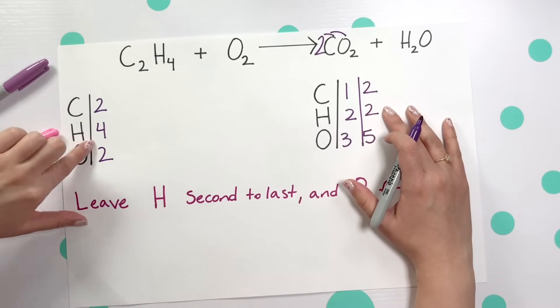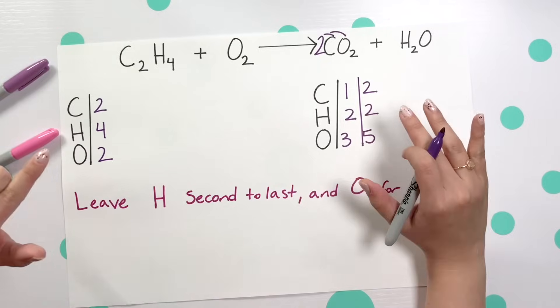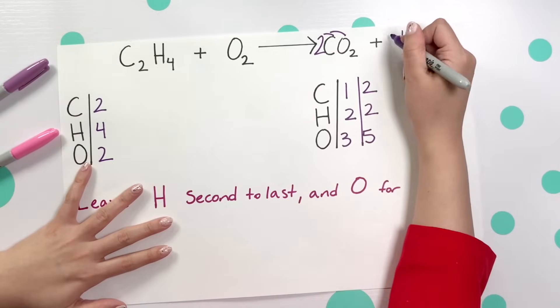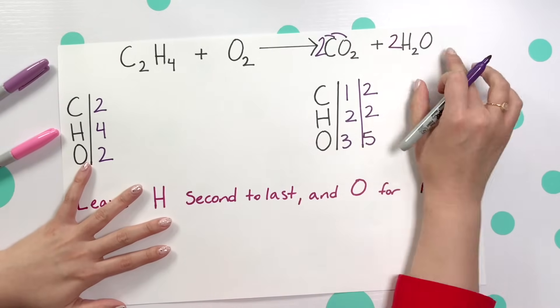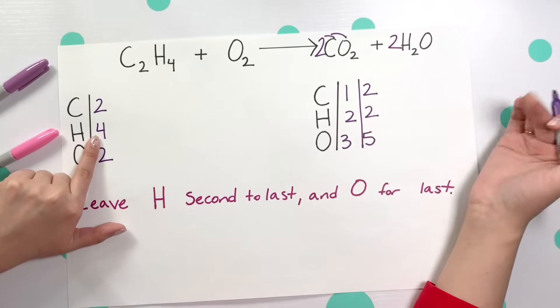We'll see there's only four on this side and we have only two on our product side, so I need two more because you're looking at what will multiply by this subscript to give us four. So two times two gives us four.